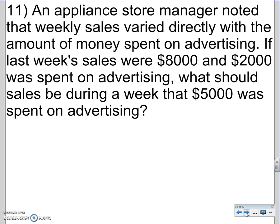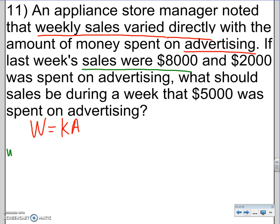11. Appliance store manager noted that weekly sales vary directly. So, again, variation. Weekly sales varied. Let's call weekly sales W. W equals directly. Direct means multiply. So, K times, vary directly with the amount of money spent on advertising. Let's call it A. Advertising. W equals K A. So, there's my equation. We got to find two situations. If last week's sales, so the weekly sales was 8,000. So, W equals 8,000. And $2,000 was spent on advertisement. So, A is 2,000. We know enough for the first situation. Let's solve it for K.